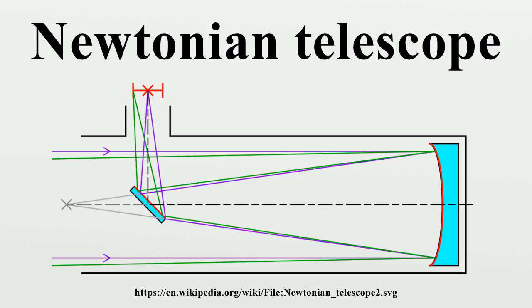He also made the tube mount and fittings. Newton's first version had a primary mirror diameter of 1.3 inches and a focal ratio of f5. He found that the telescope worked without color distortion and that he could see the four Galilean moons of Jupiter and the crescent phase of the planet Venus with it.